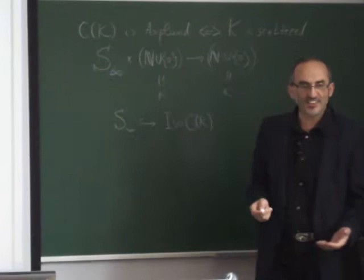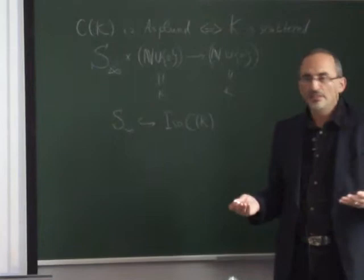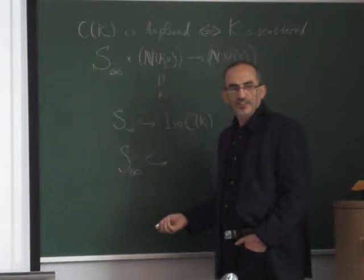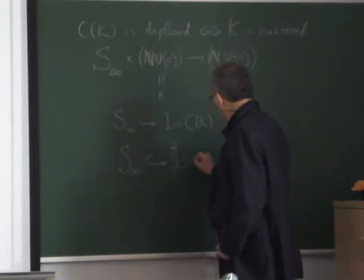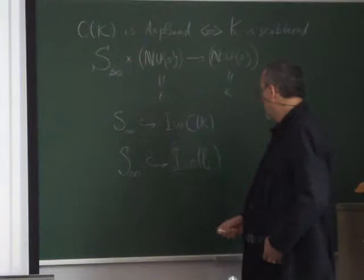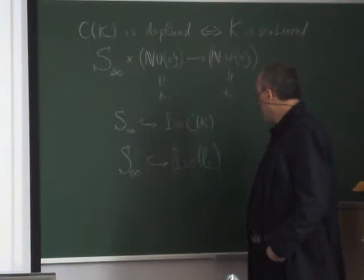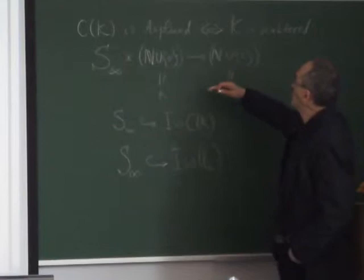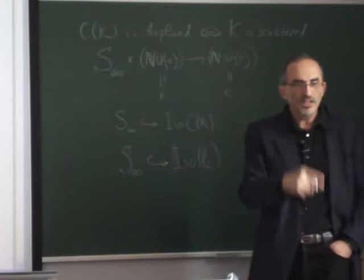For example, if you take S infinity, as the Polish group, you have action on one point compactification of the natural numbers. Of course this K is scattered, and in this way you can embed your symmetry group Polish symmetry group into isometric group of the Banach space C of K where K is one point compactification. It's good news because here C K now you know by this theorem is aspen.